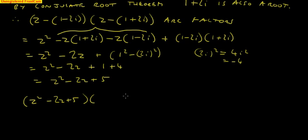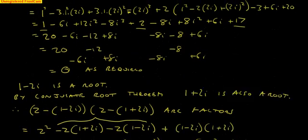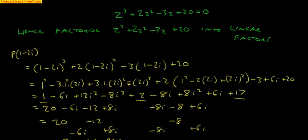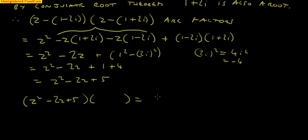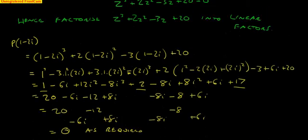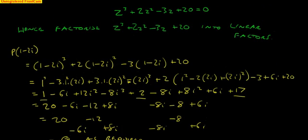Equals our whole expression. Which is, right up here, z cubed plus 2z squared minus 3z plus 20.